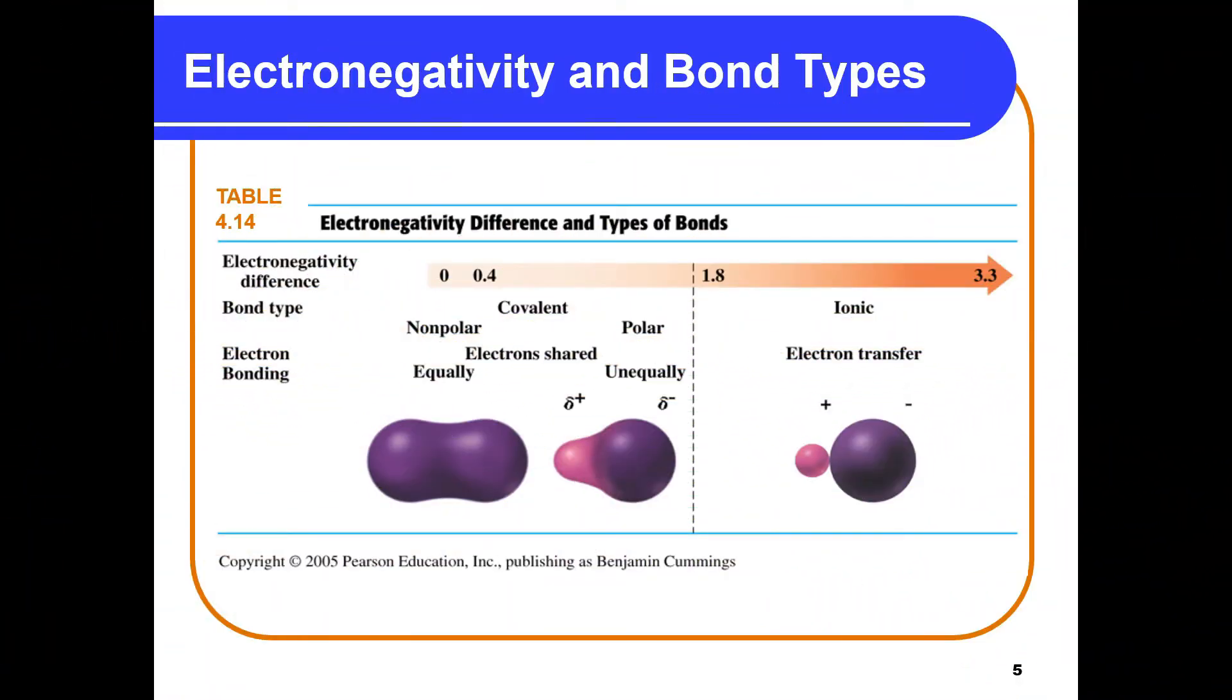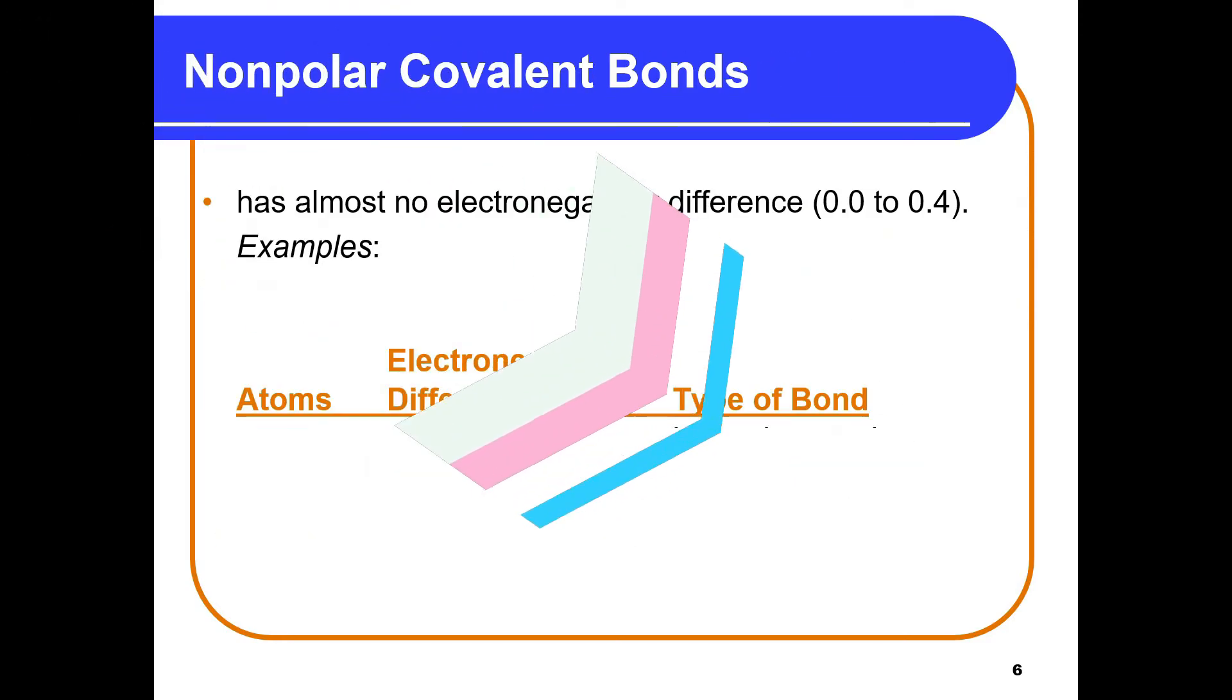How can we use electronegativity to determine the type of bond? We see in our table wherein the difference between the electronegativity of atoms indicate the type of bond. Don't worry, electronegativity has no unit.